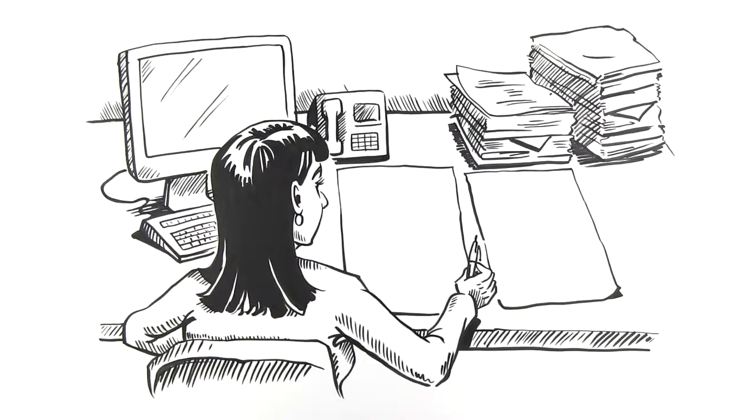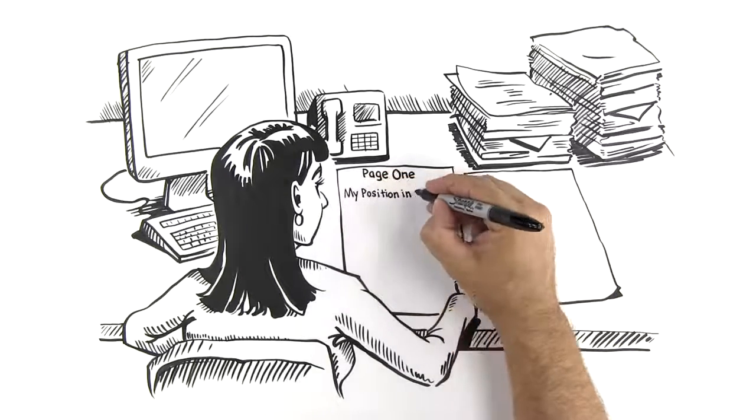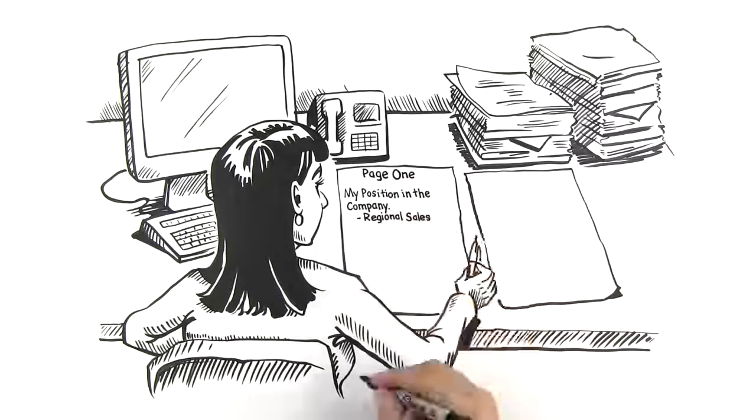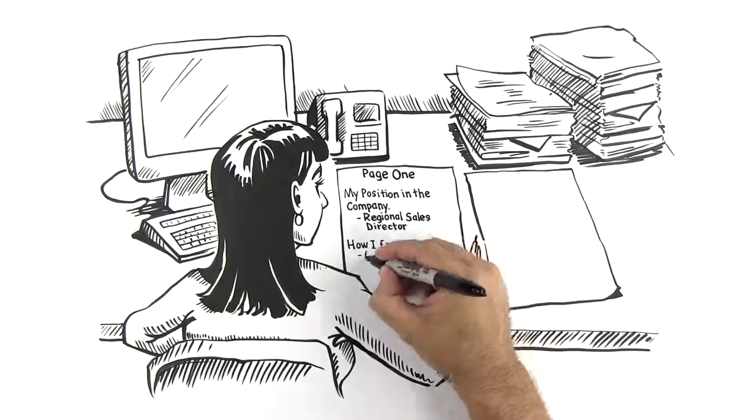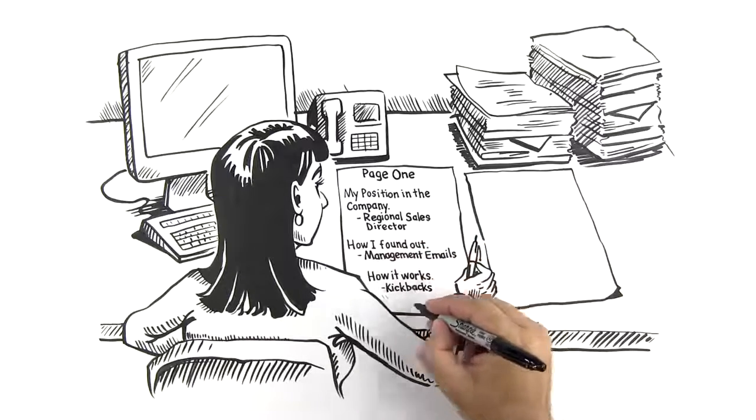Organize your fraud story on two pages. On page one, detail your position in the company, how you found out about the fraud, and how the fraud works. Do not use jargon or acronyms. Tell a story, but leave out identifiers.